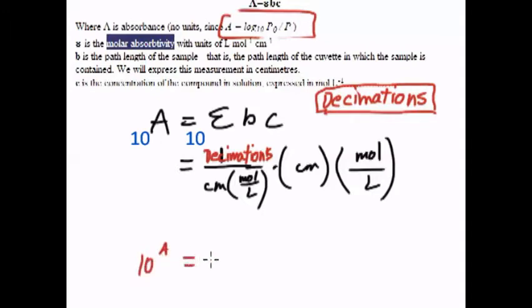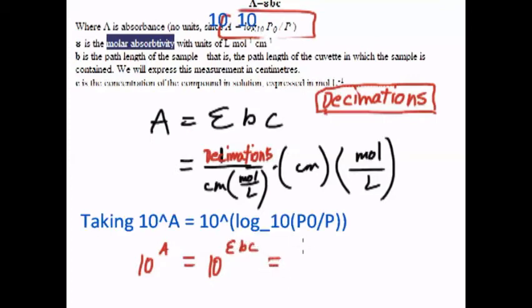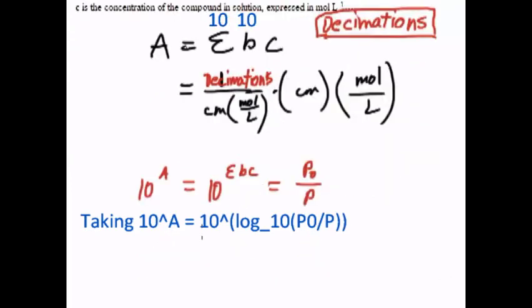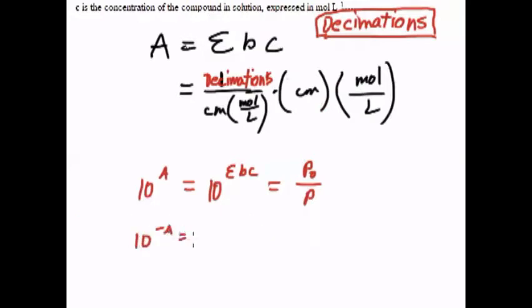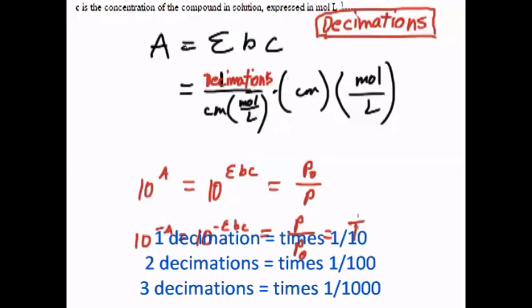Ten to the power of a equals ten to the power of epsilon b c, will be equal to p sub nought over p. If we take the reciprocal of that, ten to the power of negative a equals ten to the power of negative epsilon b c equals p over p sub nought, which is the transmittance. So if we start with a hundred percent and a is equal to one, then we end up with ten percent. If a is equal to two, we'll end up with point oh one. If a is equal to three, we'll end up with point zero zero one.